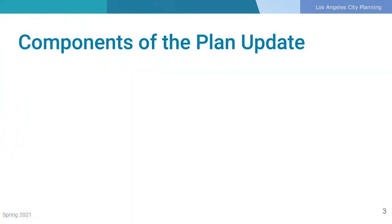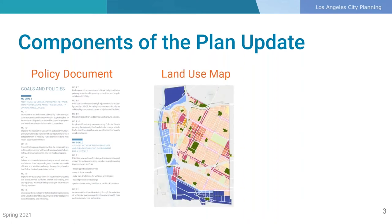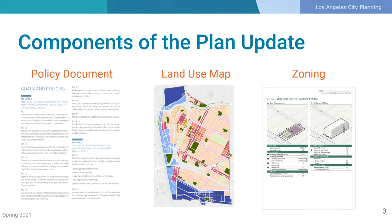As we discussed in previous sections of this video series, the Community Plan update consists of three primary components: the policy document, which contains goals and policies as well as a future implementation chapter; the land use map, a legally binding document that displays the location of land uses within the plan area; and the new zoning, which implements the policies and the community vision by updating the regulations of what can be built on each piece of land.